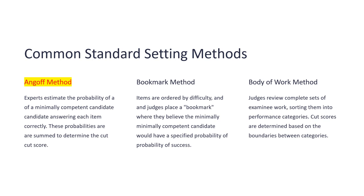The Angoff method is well documented. It is time-consuming — you take the minimally competent candidate and ask: what is the probability that this question or assessment method will identify the minimally competent, borderline candidate? The Bookmark method uses experts to judge questions as difficult, moderately difficult, or easy, ensuring a good spread of difficulty across the exam.